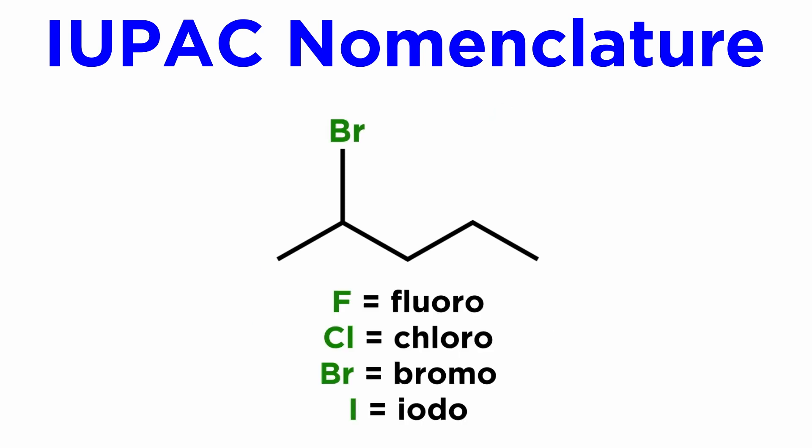We will simply give halogens a slightly different name when found as a substituent — those will be fluoro, chloro, bromo, and iodo groups. And if a substituent occurs at the same position from either side, then we will begin at the end closer to the substituent that has alphabetical priority.